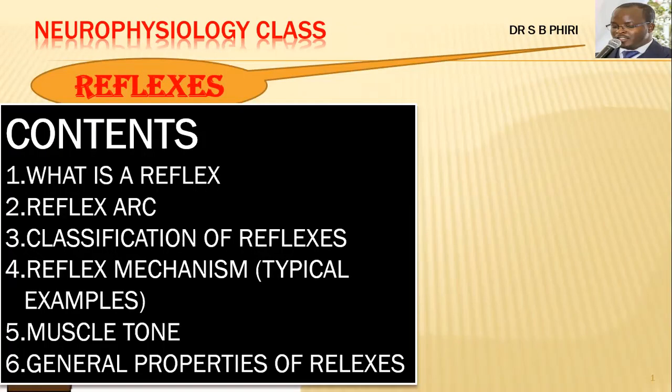Reflexes are part sensory and part motor. From the sensory receptors you have a sensory nerve fiber projecting to the central nervous system, then you have an integrative or processing center located within the CNS. From there you have motor fibers innervating the effector organs, which could be muscles or glands that will respond. So you have a stimulus, and that stimulus will produce a particular response as the animal or human being reacts.